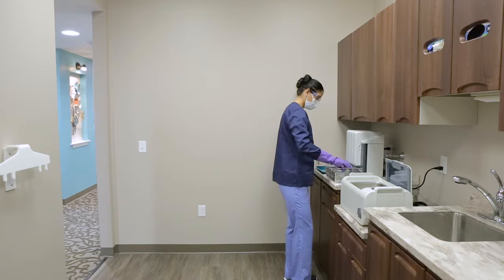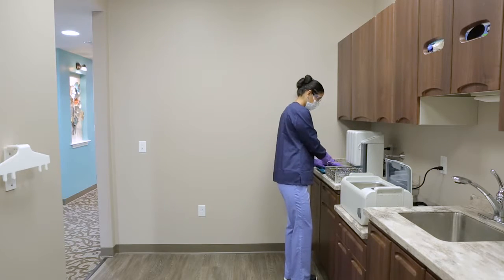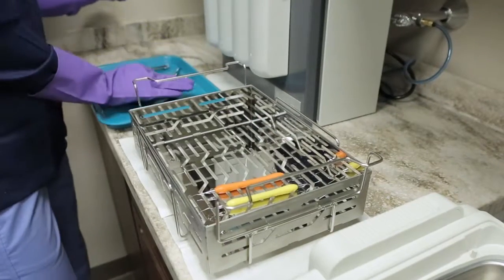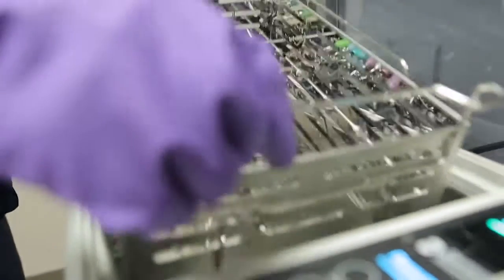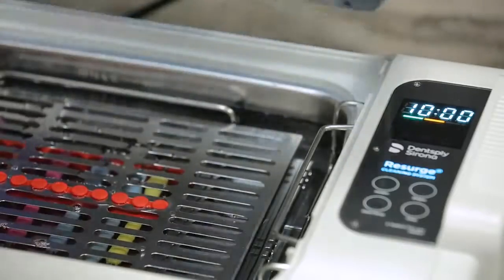Once the timer counts to zero, you are ready to start cleaning instruments. The Resurge ultrasonic cleaners use a universal rack system that allows the loading of instruments into a deep instrument basket, stackable trays, or into a variety of standard instrument cassettes.